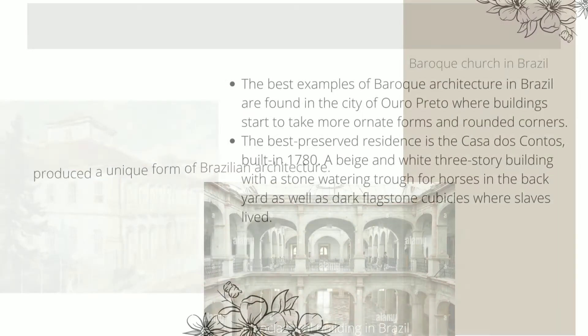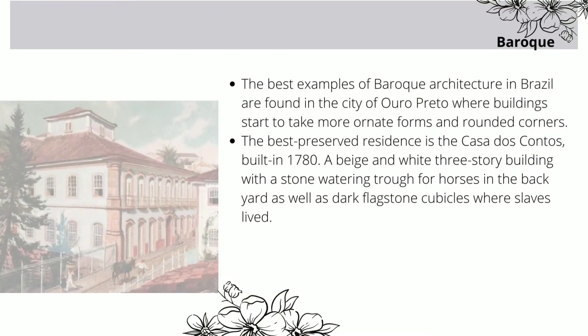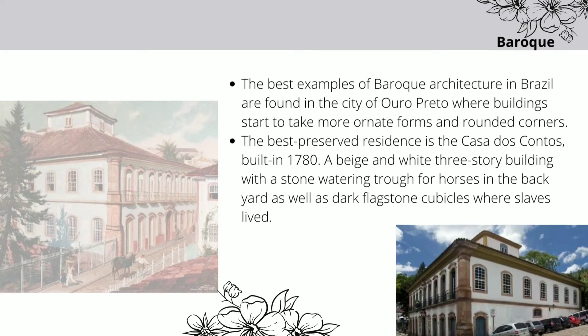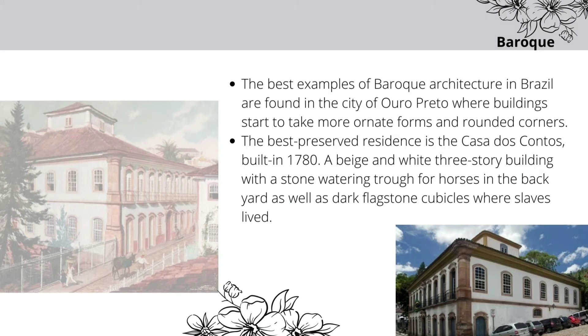The best examples of Baroque architecture in Brazil are found in the city of Ouro Preto, where buildings begin to take more ornate forms and rounded corners. Certain structures also depict paintings incorporated into the walls. The best-preserved residence is the Casa dos Contos, built in 1780 — a beige and white three-storey building with a stone watering tray for horses in the backyard, as well as dark flagstone cubicles where slaves lived. Today the structure serves as the office of the city's postal authorities.